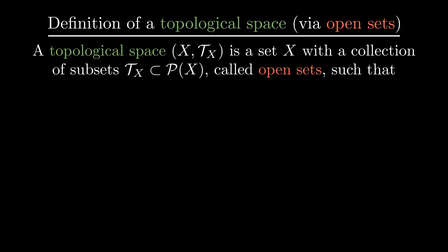That is, a topological space is a set X together with a collection of subsets called open sets. We assume that the empty set and the entire space are open.